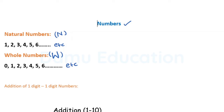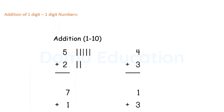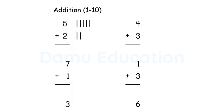In whole numbers, zero is included, whereas natural numbers start from one. Now we'll see the basic addition operation. Adding means grouping or joining of two numbers. We will look at addition of one digit and one digit numbers using vertical addition.